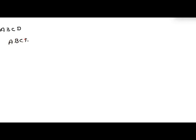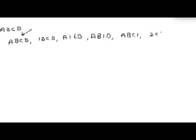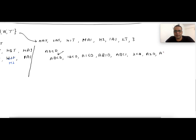Let's say the string is abcd. Then the output will be: abcd, then 1bcd, a1cd, ab1d, abc1 — this is when we replace one character with one. Then 2cd, a2d when the first two characters are replaced, then a1c1, 1b1d.